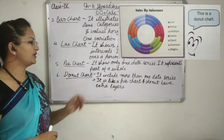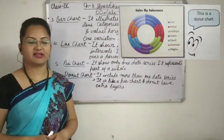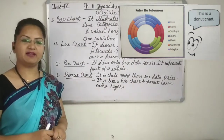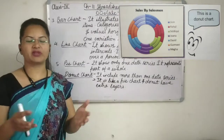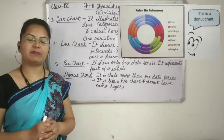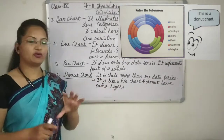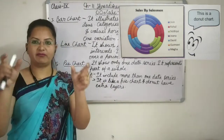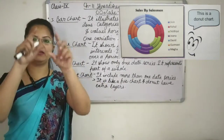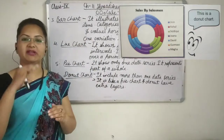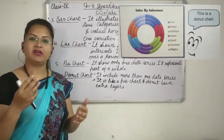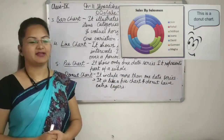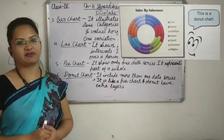Now donut chart. It includes more than one data series. It is the same as pie chart but here we can compare more than one data series. In the donut chart it will be hollow from the center. There will be a first ring, then second ring, third ring — meaning there will be a different layer for every data series and that is why it compares more than one data series. It also represents part of a whole.